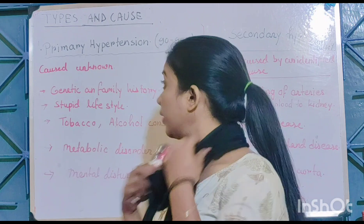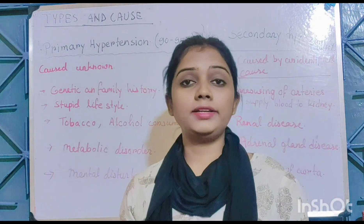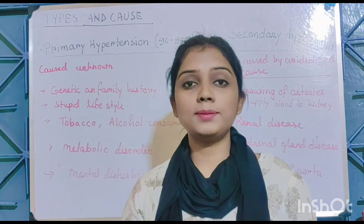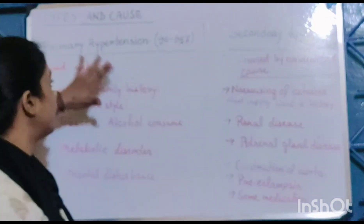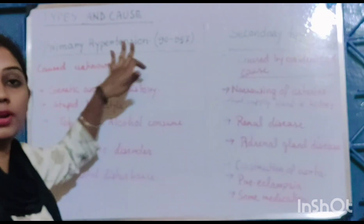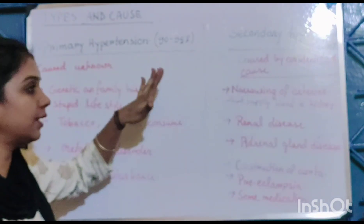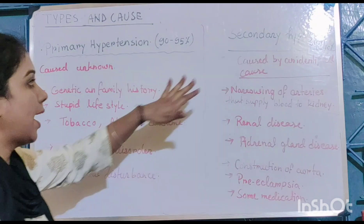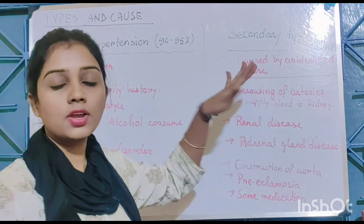There are two types of hypertension: primary hypertension, which is also called essential hypertension, and secondary hypertension.